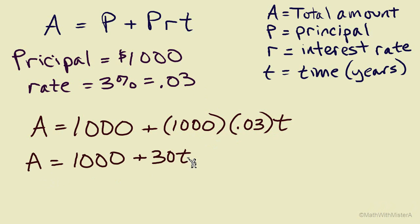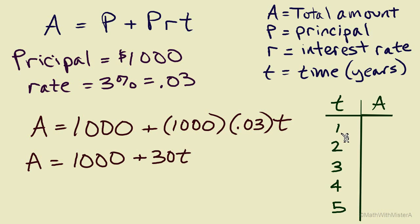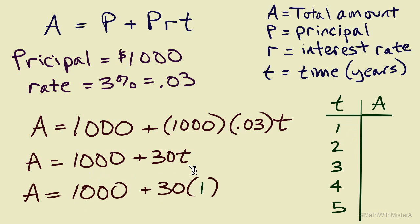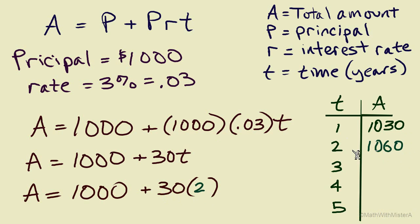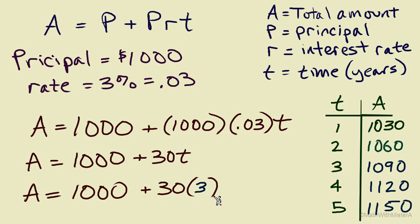We can choose various values for T and evaluate to see how A changes. Substituting each value of T into the formula and using order of operations: if T equals 1, A equals 30 times 1 plus 1,000, which is $1,030. If T equals 2, 30 times 2 is 60, plus 1,000 equals $1,060. We can continue for each value of T. When T equals 5 — a five-year investment — we see the result $1,150.